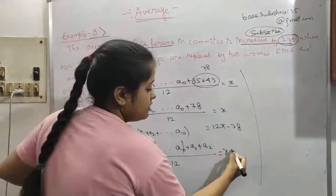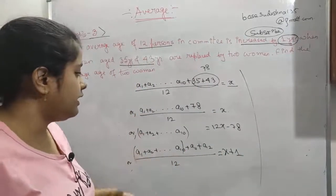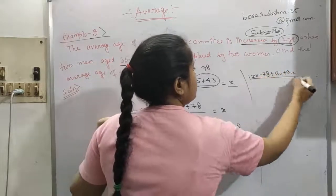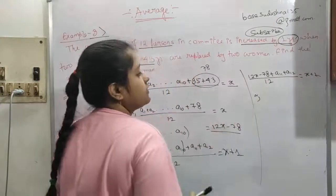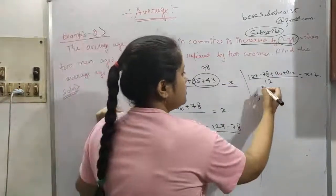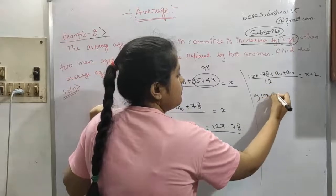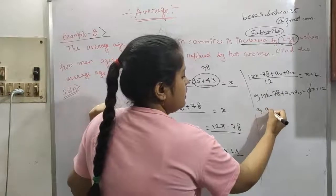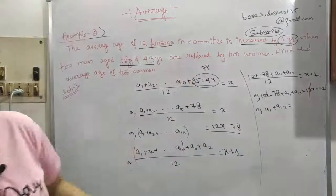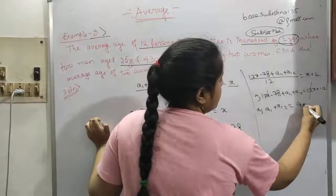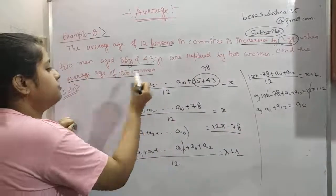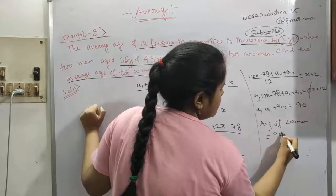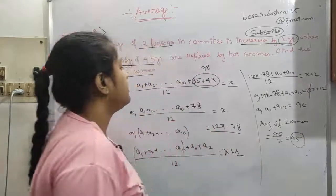The average is increased by 1 year, so previously average was x and now average is x + 1. Putting a1 to a10 as 12x − 78, we get (12x − 78 + a11 + a12) / 12 = x + 1. The 12x terms cancel out, so a11 + a12 comes down to 90. The average age of the 2 women is 90 / 2 = 45 years.